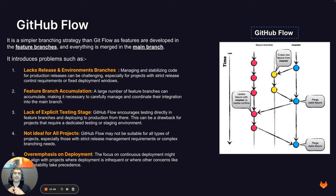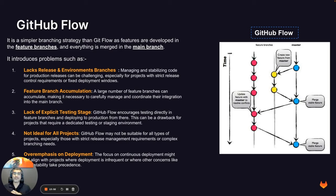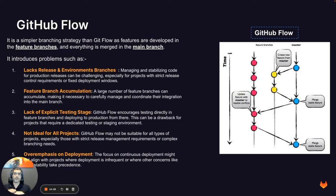The second challenge is feature branch accumulation. You want to make sure a feature is completely done before merging it into main because at some point it will be deployed to production. This requires longer development time, meaning code accumulates. A large number of feature branches accumulate, making it necessary to carefully manage and coordinate their integration into the main branch—and sometimes you may even decide to drop some code because merging becomes a nightmare.